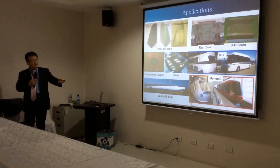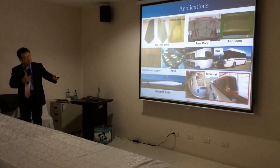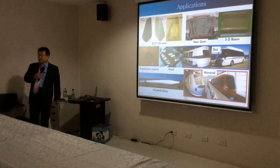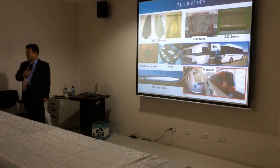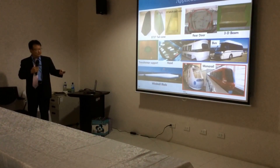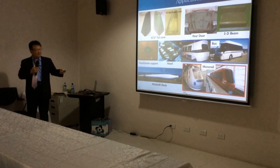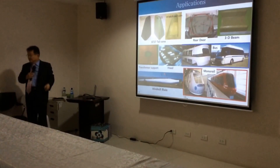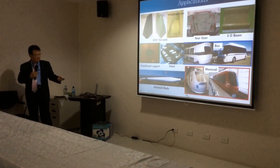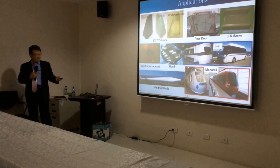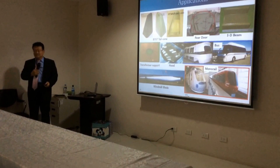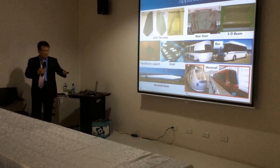Other RTM applications include the Boeing 737 tail cone, the rear door of an armored vehicle, a three-dimensional beam about 40 centimeters long, and a transformer support for high-speed rail. We can also fabricate a hood — top and bottom at the same time — and windmill blades; for example, a 3-megawatt blade 44 meters long weighing only 10 tons. RTM can also be applied to monorail development.